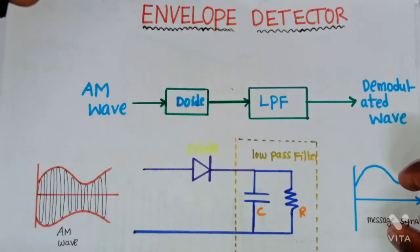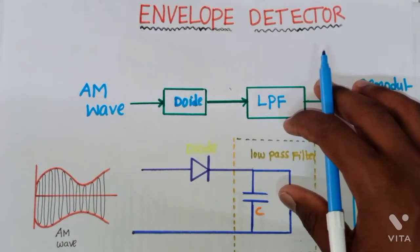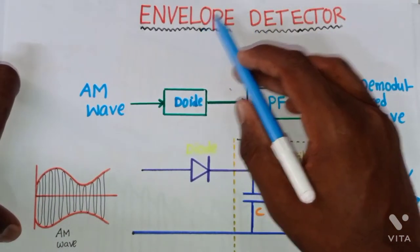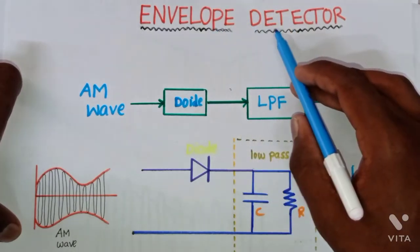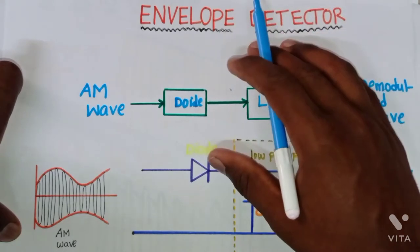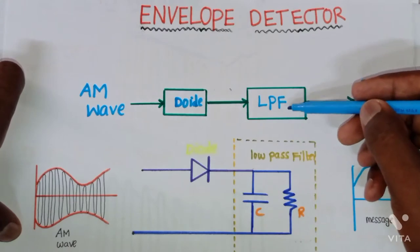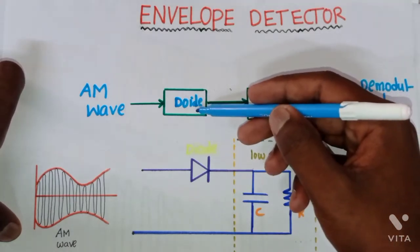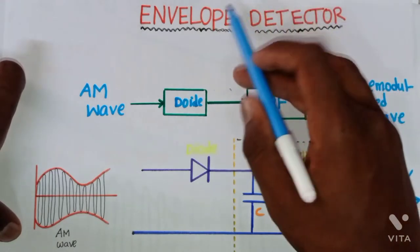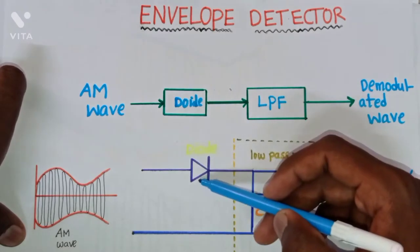In this video we are going to discuss about one of the important detectors or demodulators in AM detection — the envelope detector. This is the simplest form of AM detector. The envelope detector consists of only two components: first is a diode, and second is a low-pass filter. By connecting a diode in series with the low-pass filter, we can form an envelope detector.